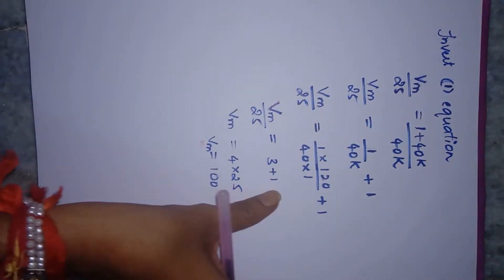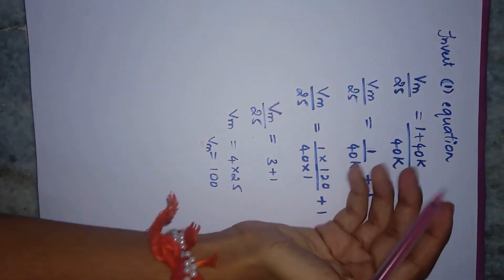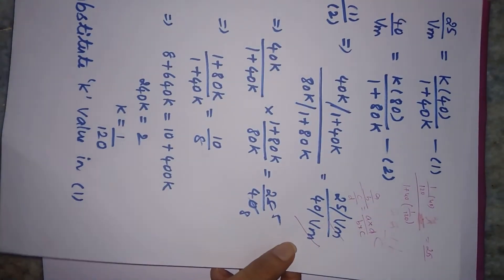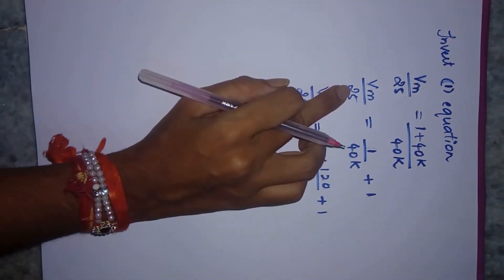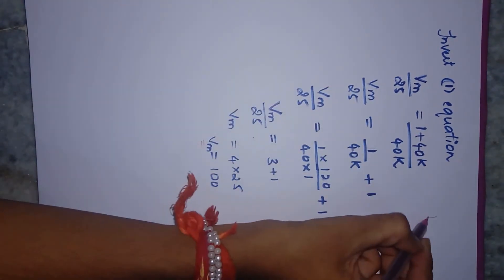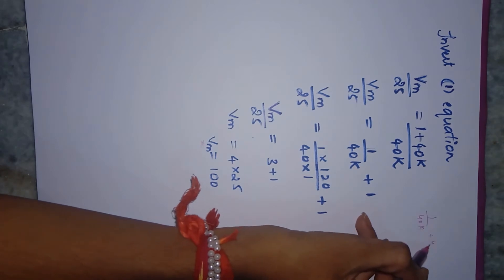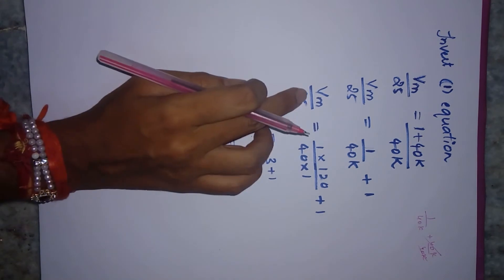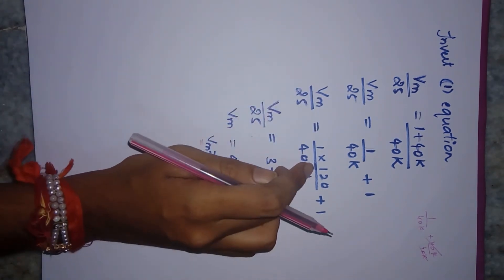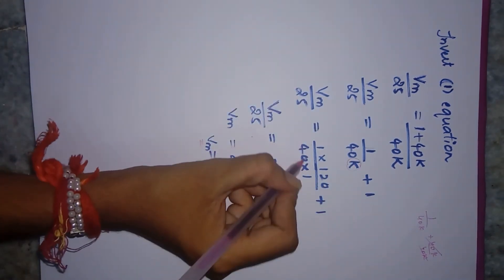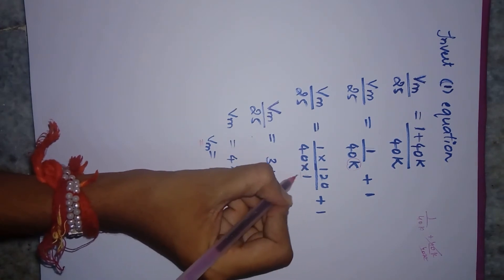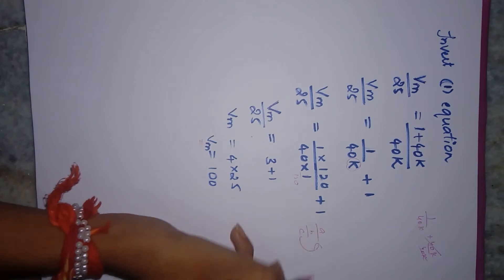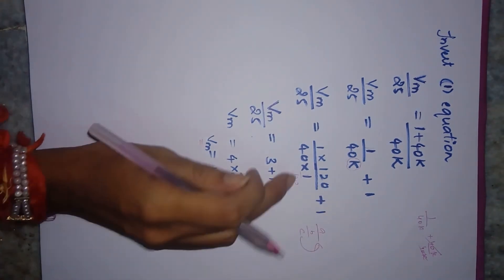I've inverted this because it's simpler: Vm/25 = (1+40K)/(40K). This can be written as Vm/25 = 1/(40K) + 1. Now substitute K = 1/120. So 1/(40 × 1/120) becomes 120/40, which equals 3. Therefore 1×3 + 1 = 4.